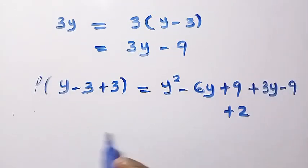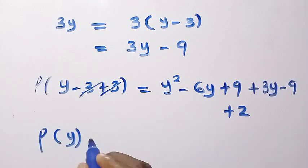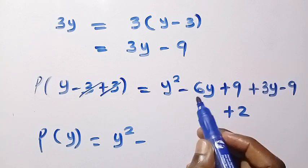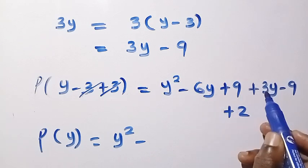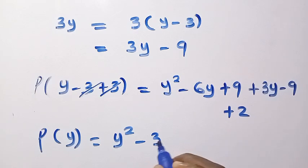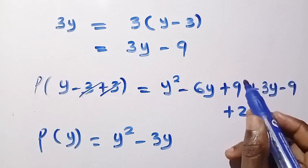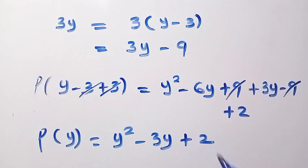But after having this, so this goes, and we have P of y equals, we have y squared minus, we have minus 6y plus 3y. And that gives us minus 3y. And also we have plus 9, minus 9 cancelled, where we have only plus 2.